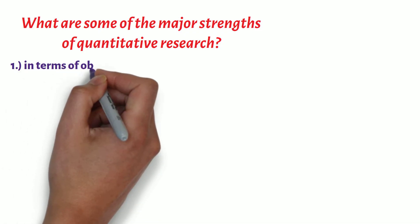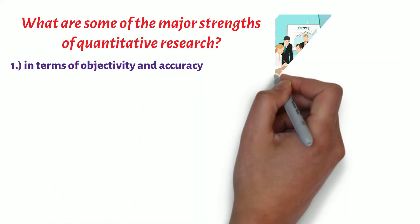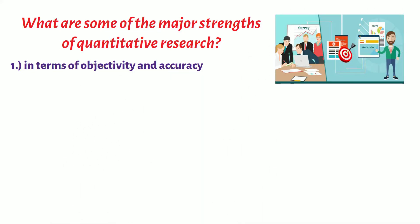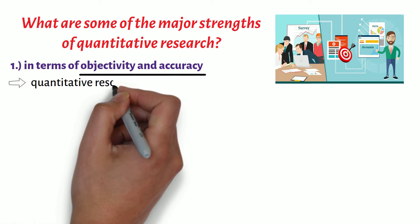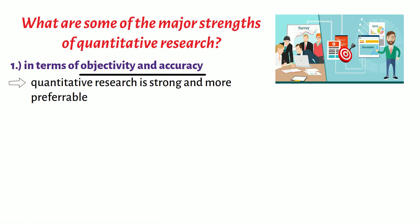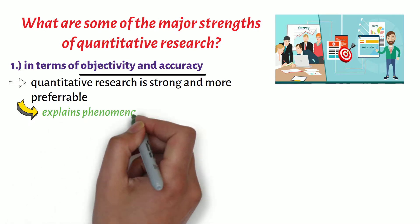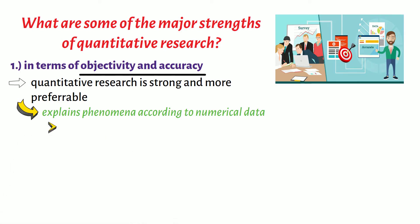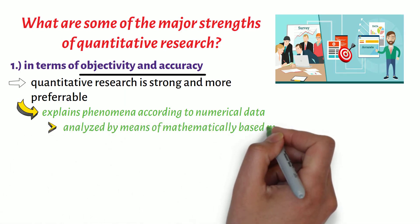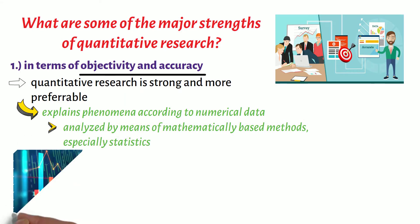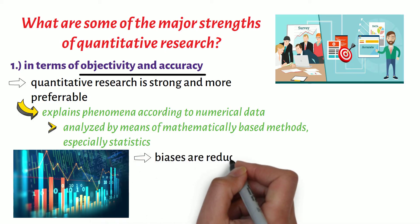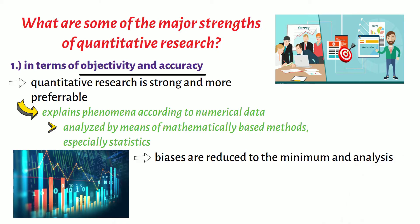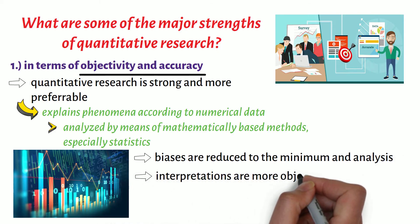First, in terms of objectivity and accuracy. If the issue is about objectivity and accuracy, then quantitative research is strong and more preferable because quantitative research explains phenomena according to numerical data which are analysed by means of mathematically based methods, especially statistics. In this way, biases are reduced to the minimum and analysis and interpretations are more objective and accurate.